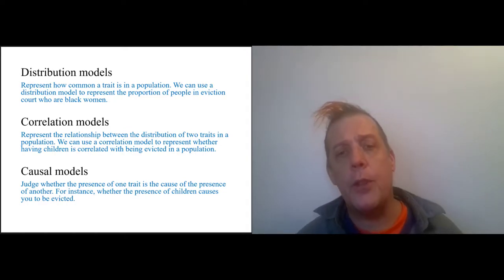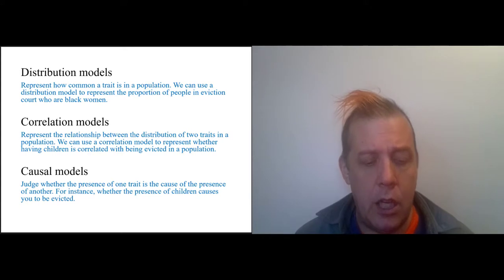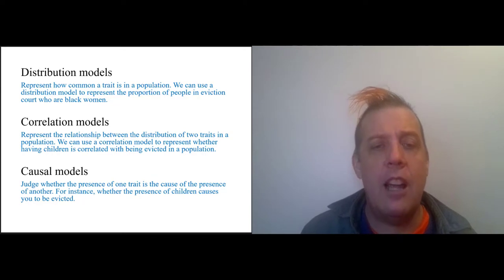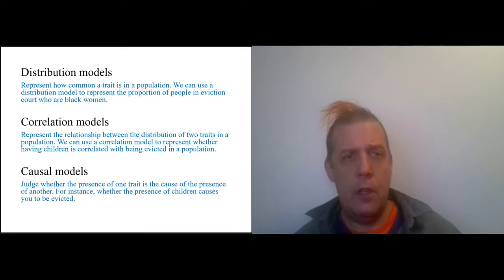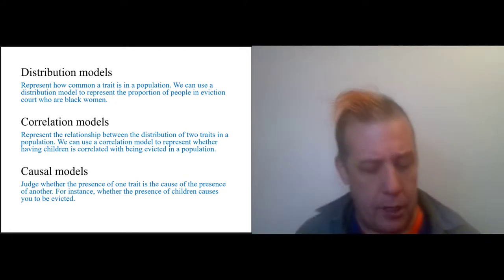You might be thinking, 'Yeah, the landlord doesn't want to rent to a family with children because the child will mess up the property.' And what you've done there is you've moved from a correlation to a causation. And that is actually a difficult move epistemologically. It's not always a reliable inference.